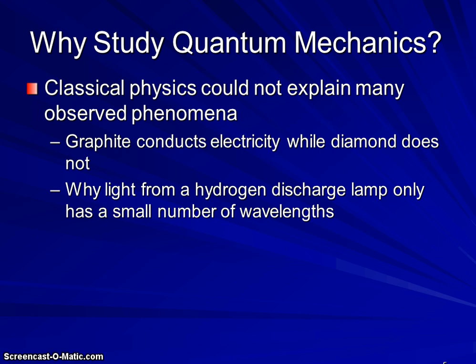For example, graphite conducts electricity while diamond does not. We're looking at covalently bonded carbon in both cases. Light from a hydrogen discharge lamp only has certain wavelengths, a very small number of wavelengths, and not a full electromagnetic spectrum.